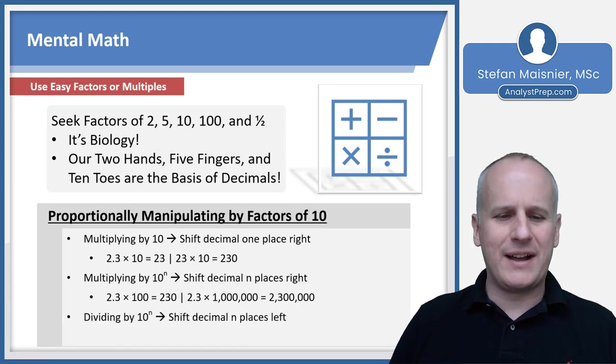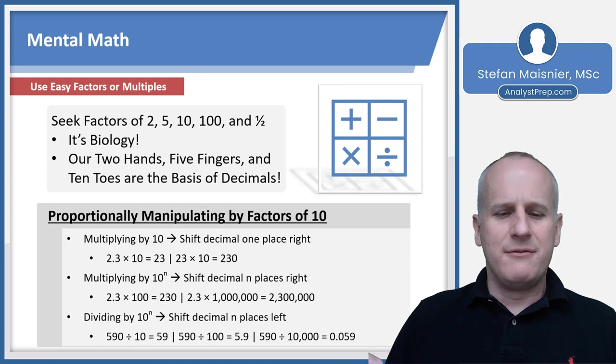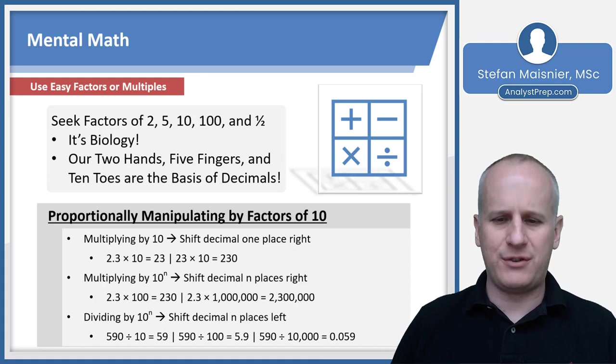And dividing by 10 to the nth means just shift the decimal n places left. So it's basically in reverse. If we did 590 divided by 10 or 10 to the first, you'd be left with 59. 590 divided by 100 would shift the decimal left two places to 5.9. And if we did 590 divided by 10,000 or 10 to the fourth power, that would shift the decimal left four places, which gives us 0.059 as the result of that division.